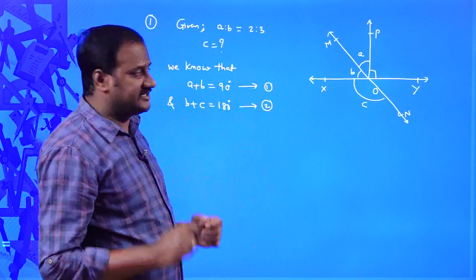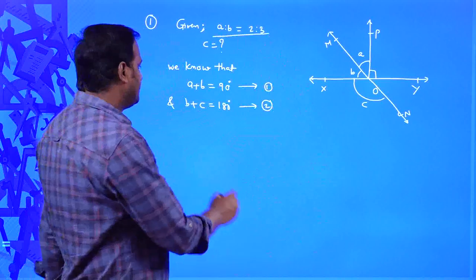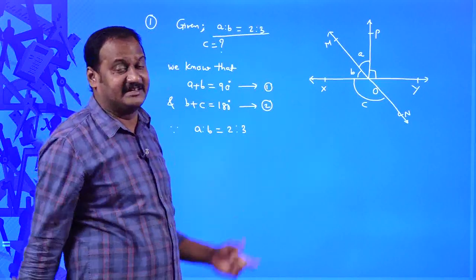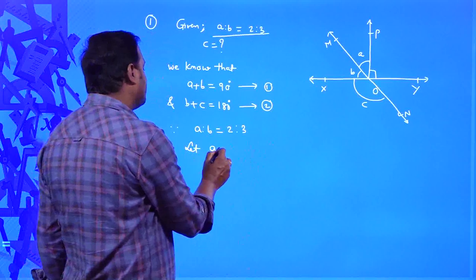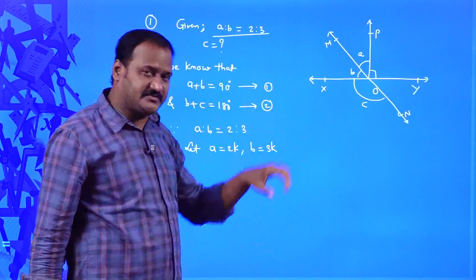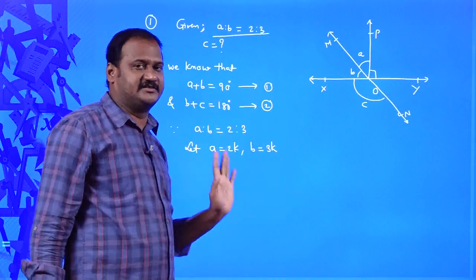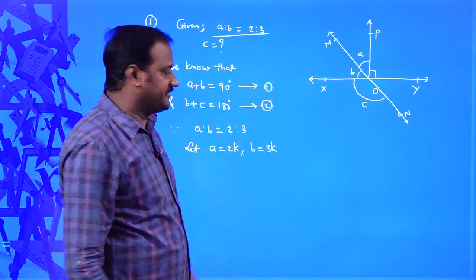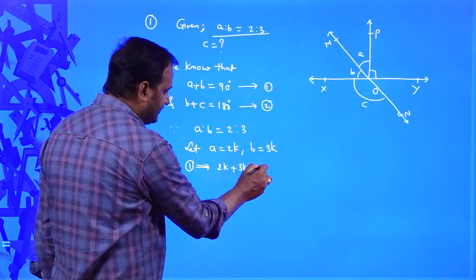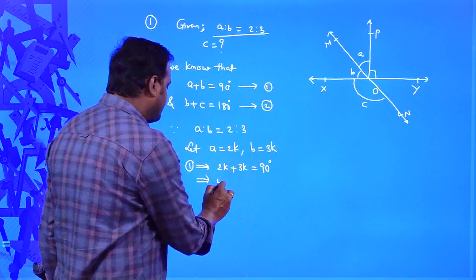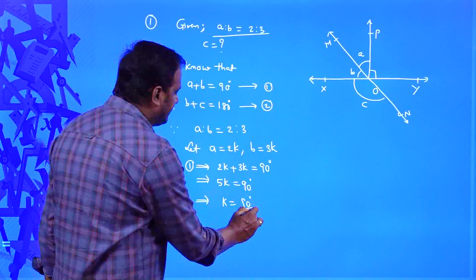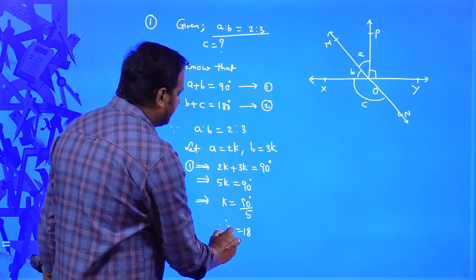To find angle C, we use A to B equals 2 to 3. We cannot say A equals 2 and B equals 3 because that is just the ratio. So let A equal 2k and B equal 3k. Using the first equation, A plus B equals 90: 2k plus 3k equals 5k equals 90 degrees. So 5k equals 90 degrees, meaning k equals 90 divided by 5, therefore k equals 18.